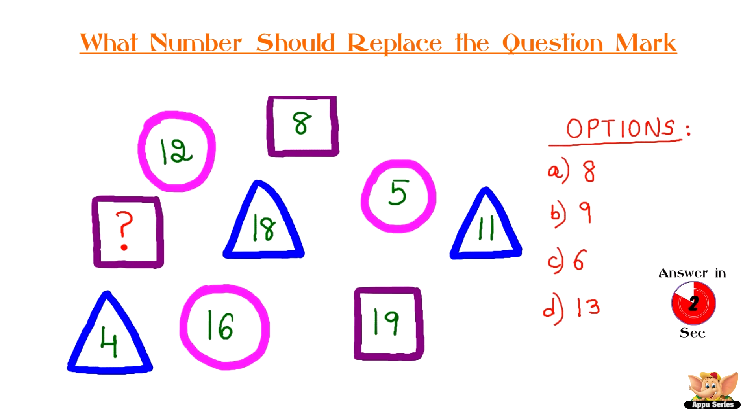Have you got your answer ready yet? Answer is option C: 6, so that the numbers in the triangles, squares, and circles add up to 33.